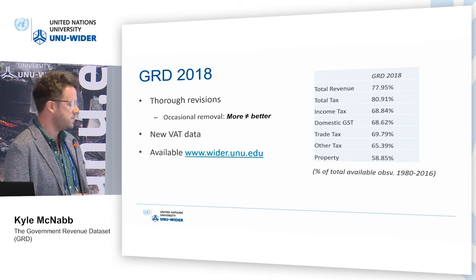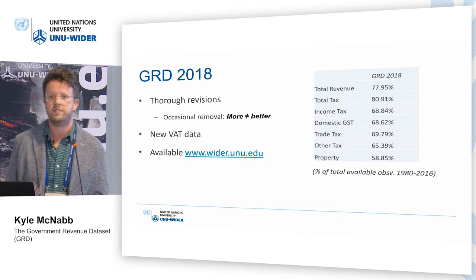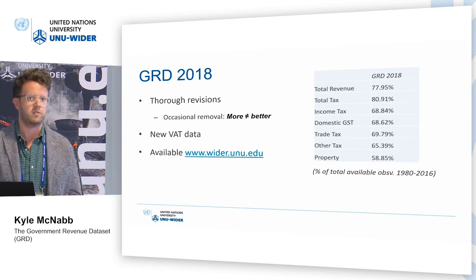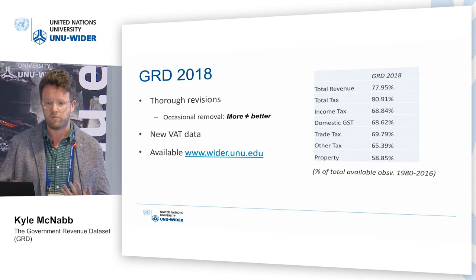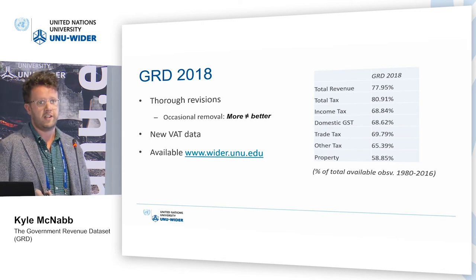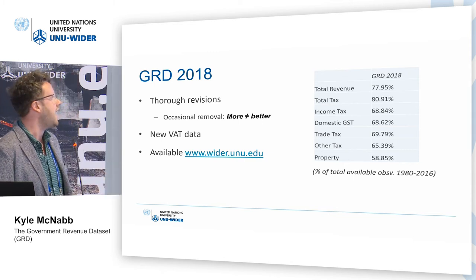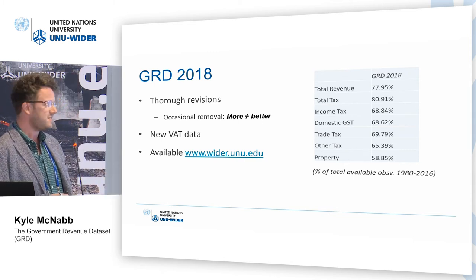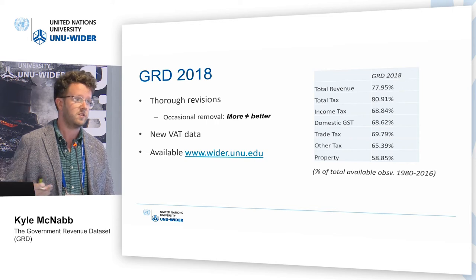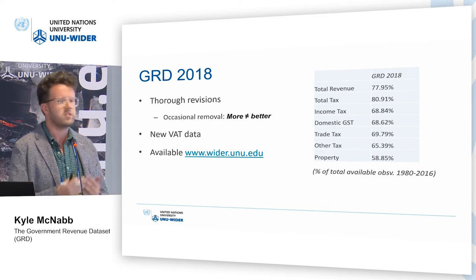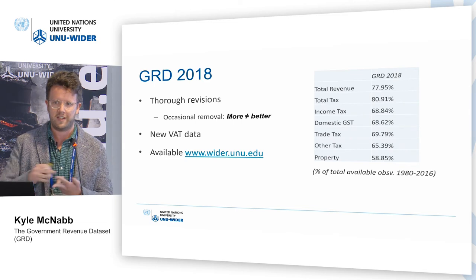Every year when we update the dataset, we make thorough revisions. The OECD in particular has been expanding the number of countries they cover, so every time a new source for a country comes on board we assess whether it's better or worse than what we have. Sometimes we end up removing data — if we find a new source suggesting initial data is incorrect or problematic, we may remove observations, but we leave a note telling users why. If we're just not sure about a data point, we put a flag in the data explaining why it looks suspicious and urging caution in specific contexts.